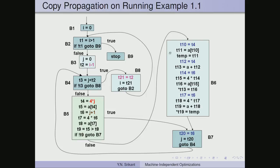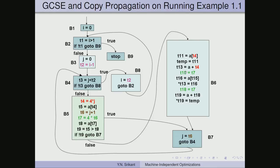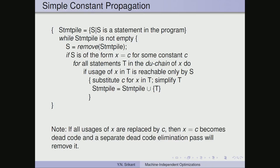On the running example, there are many copies: T10 can be replaced by T4, T12 can be replaced by T4, T14 can be replaced by T6, and so on. After applying copy propagation we get a cleaner result that exposes the next level of common subexpressions. Another round of copy propagation then gives a very condensed piece of code. That completes the copy propagation algorithm.